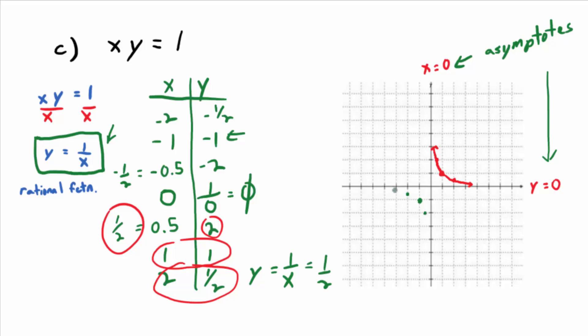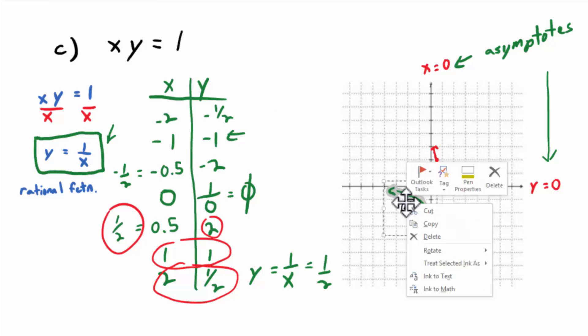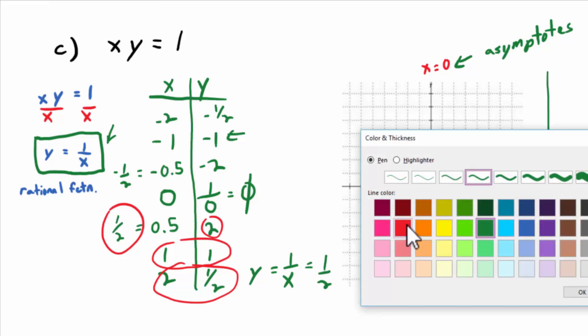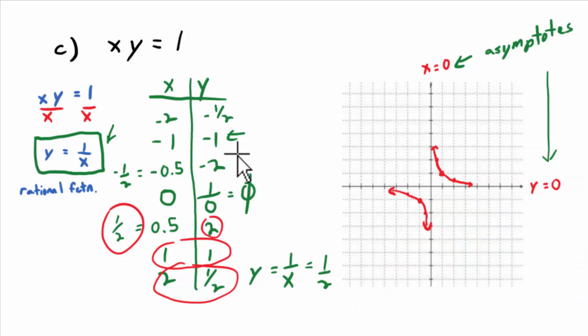And when I draw it, I should draw it that it gets closer and closer to the x-axis as it goes to the left but never actually touches. And gets closer and closer to the y-axis but never actually touches. And why I use two different colors, I don't know. So I'll change that guy to red. There we go.